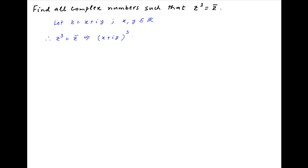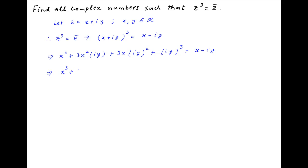this equation can be written as x plus iy whole cube is equal to x minus iy. Opening up the left hand side, we get x cube plus 3x square times iy plus 3x times iy square plus iy cube is equal to x minus iy. This implies that x cube plus 3x square yi minus 3xy square minus i times y cube is equal to x minus iy.